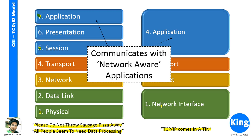It also adds a source port number. The reason is that if there are two applications running on your computer going to the same IP address, when the reply comes back, the transport layer needs to know which data goes to which application — and it identifies that by the source port numbers.